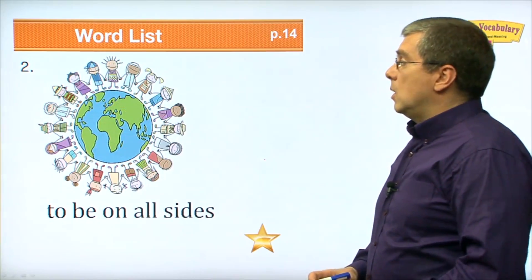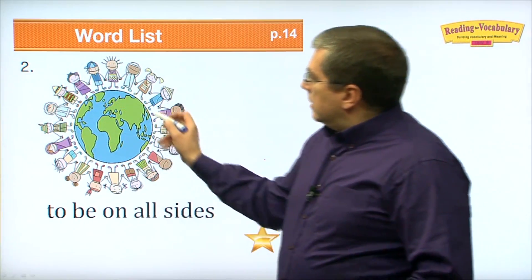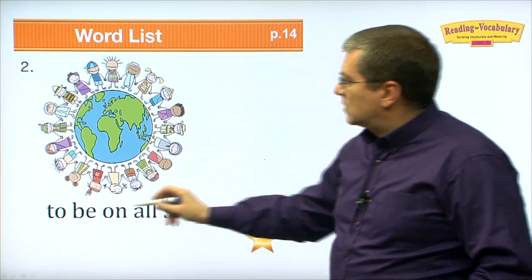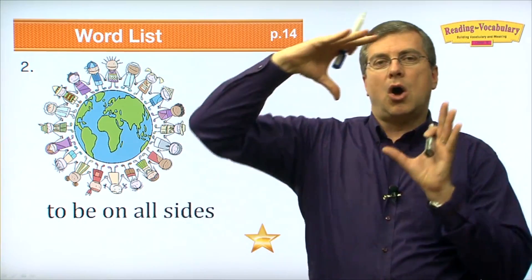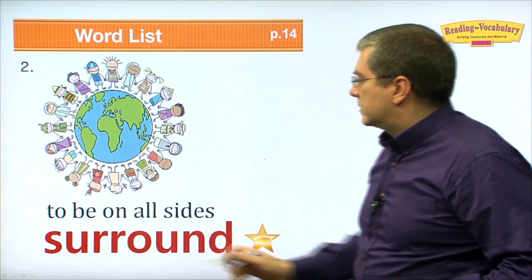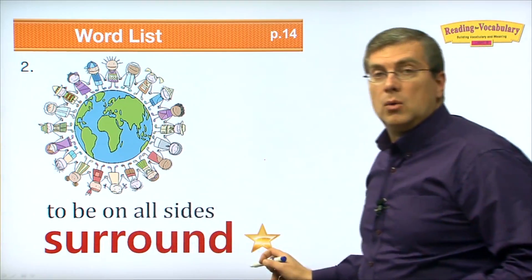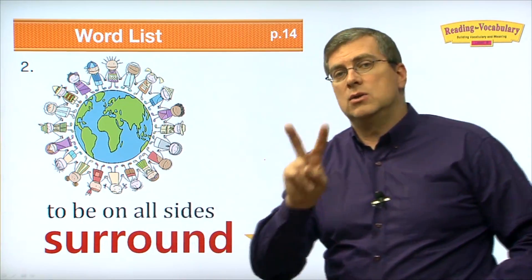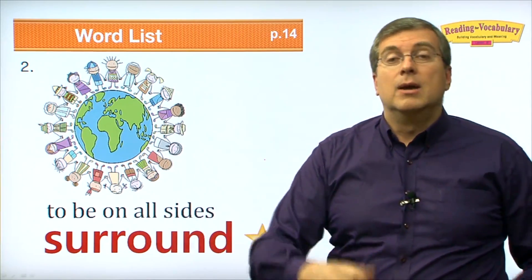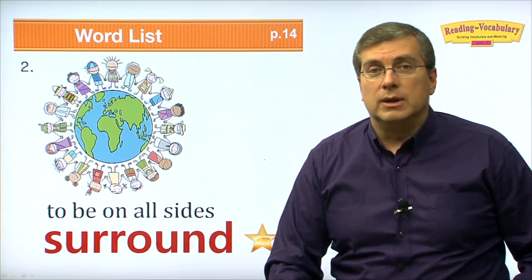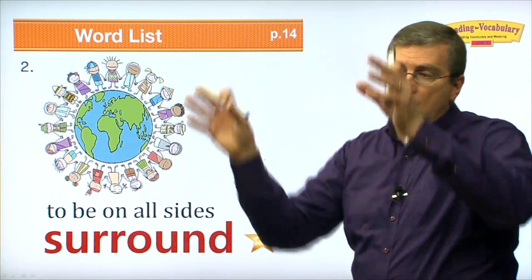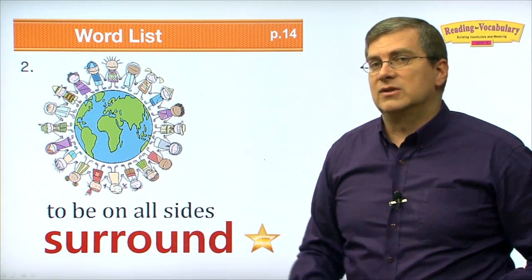Next word, number two. What's going on here? This is the Earth and there are people all around it on the surface. To be on all sides — so something is on all sides of something. What do we say? It is surrounding that thing. Surround. You can hear two sounds: surround. Surround means to be on all sides of something.